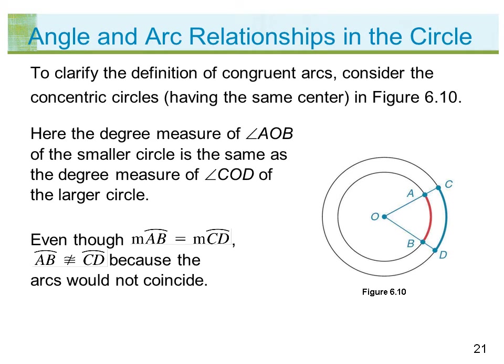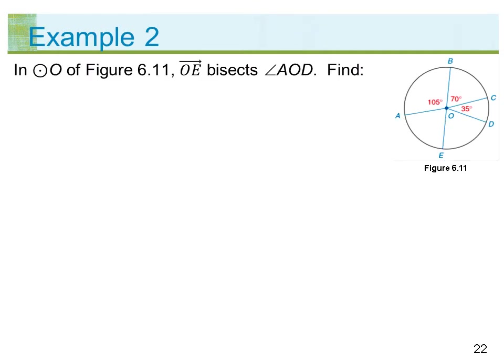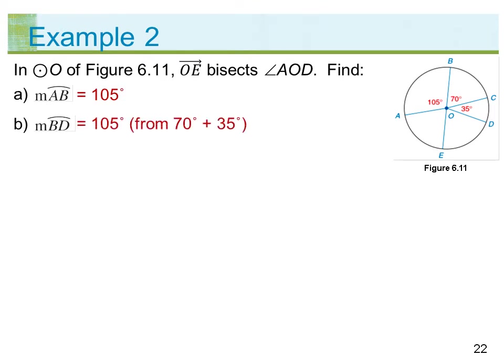Even though the measure of arc AB is equal to the measure of arc CD, arc AB is not congruent to arc CD because the arcs would not coincide. In circle O of figure 6.11, ray OE bisects angle AOD. Find: A) the measure of arc AB — 105 degrees. B) the measure of arc BD — 105 degrees.